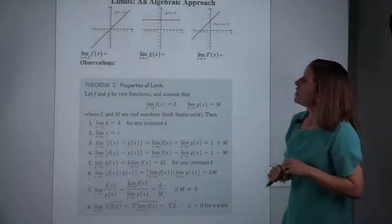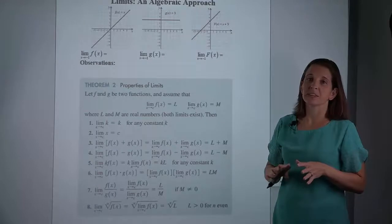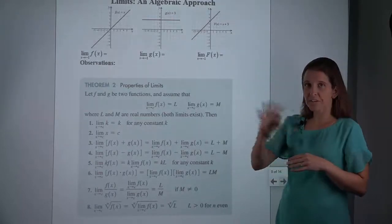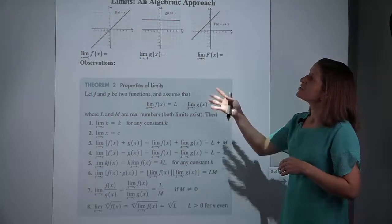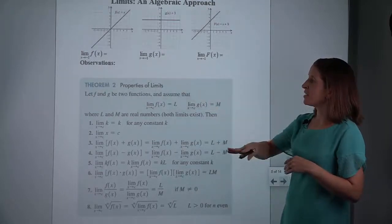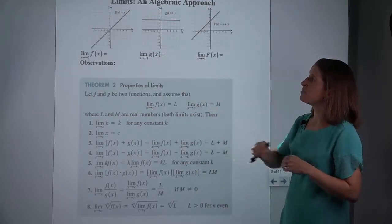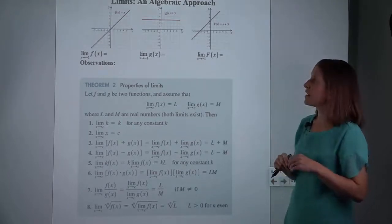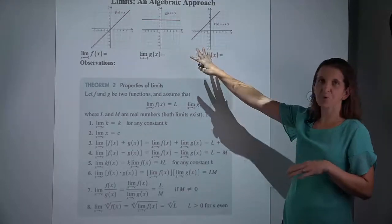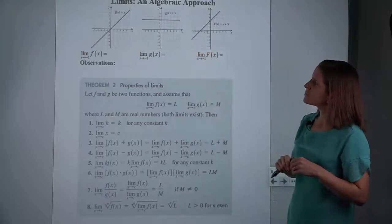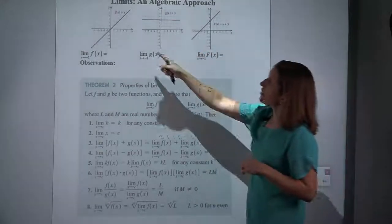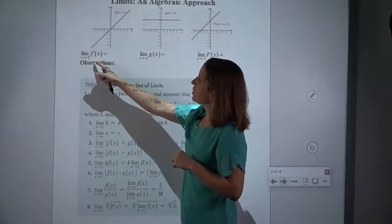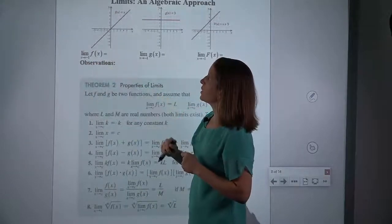So we're going to use our understanding of doing limits by tracing, or numerically, to be able to step away from that entirely and take limits algebraically, meaning we don't have to have a picture of a graph at all. But we're going to use what we just learned as a segue to get there. This is the graph y equals x, and the question is: as x approaches negative 1, what is the limit as x approaches negative 1 on this function?